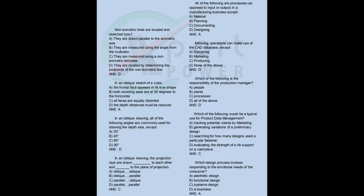All of the following are processes in a manufacturing business except: a) material, b) planning, c) documenting, d) designing. Answer: A. The following operations can make use of the CAD database except: a) designing, b) marketing, c) producing, d) none of the above. Answer: D. The responsibility of the production manager includes: a) people, b) plants, c) processes, d) all of the above. Answer: D.